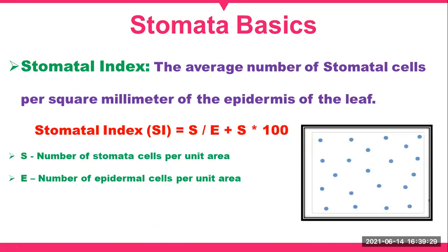The second part is stomatal index. In calculating stomatal index, we consider both stomatal cells and epidermal cells. The formula is: Stomatal Index = S / (E + S) × 100, where S is the number of stomatal cells per unit area and E is the number of epidermal cells per unit area.